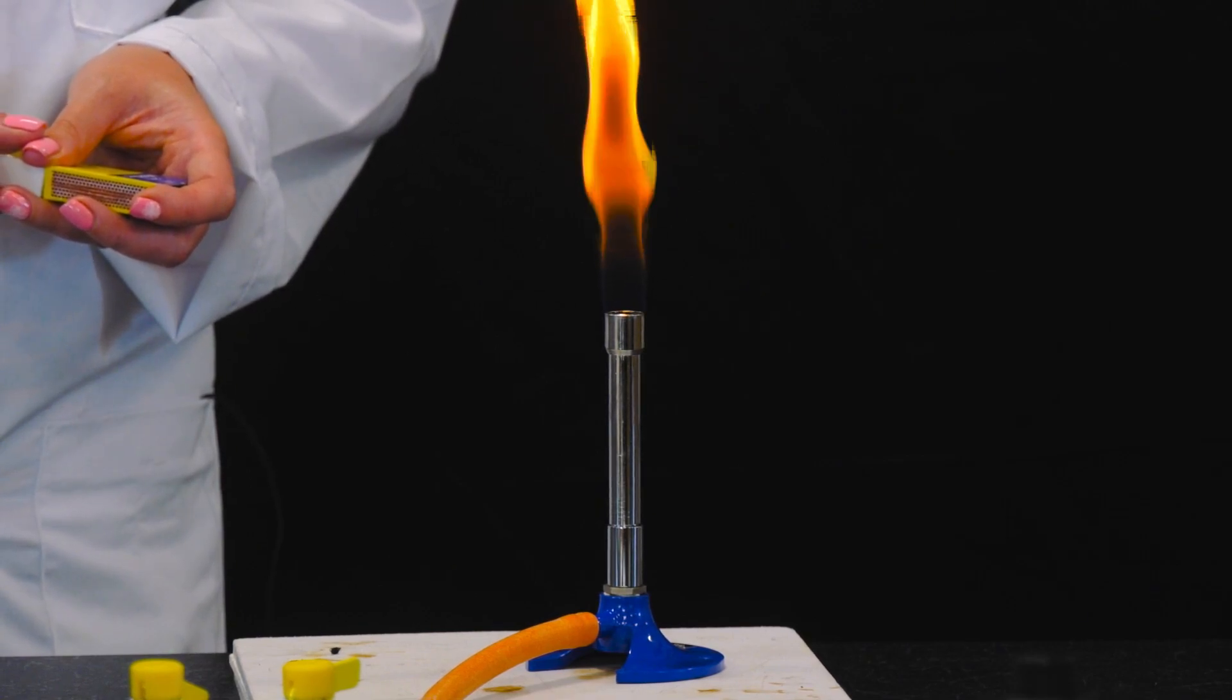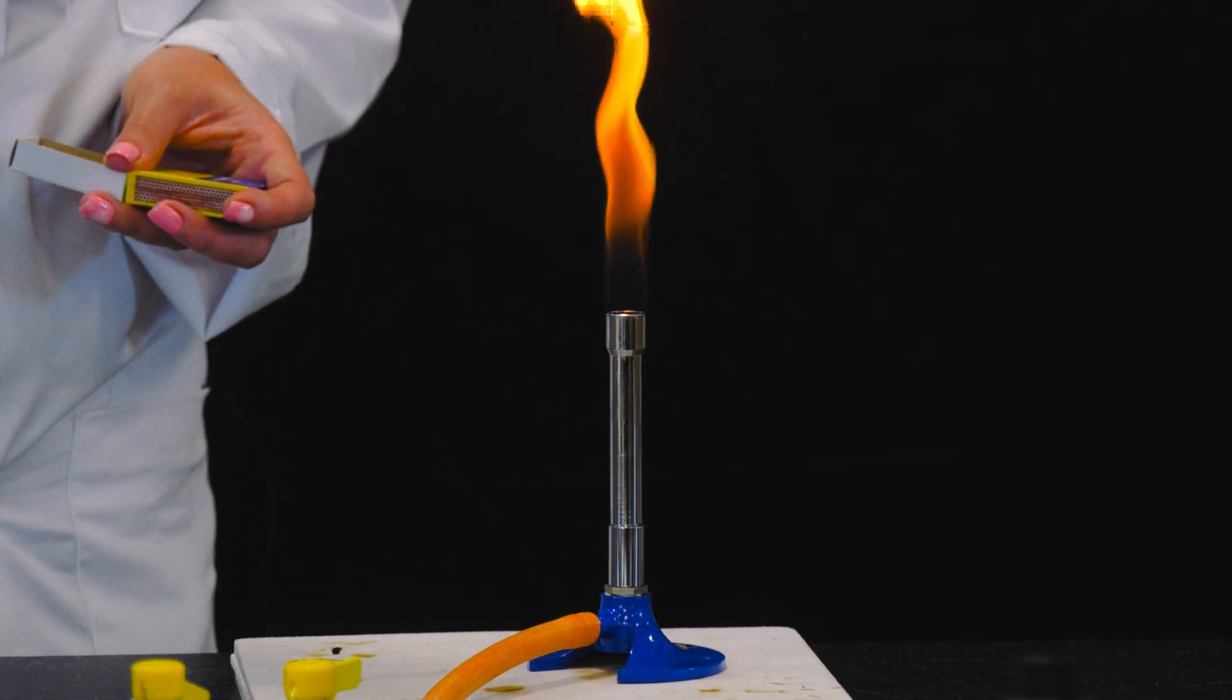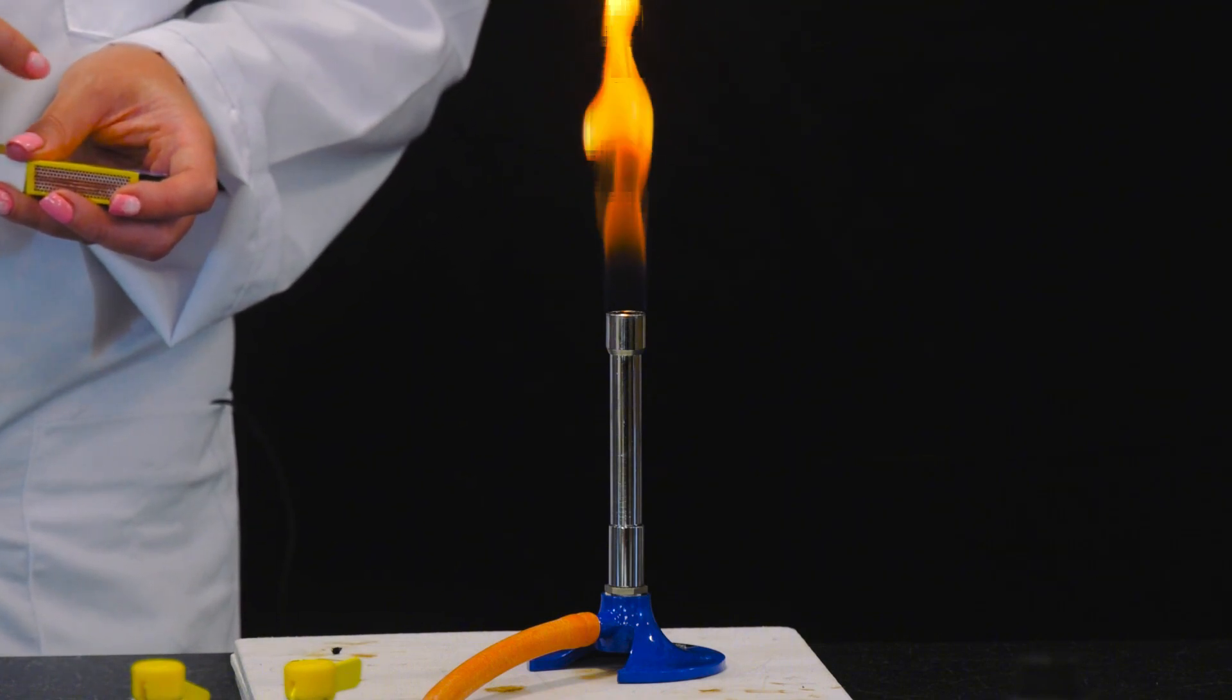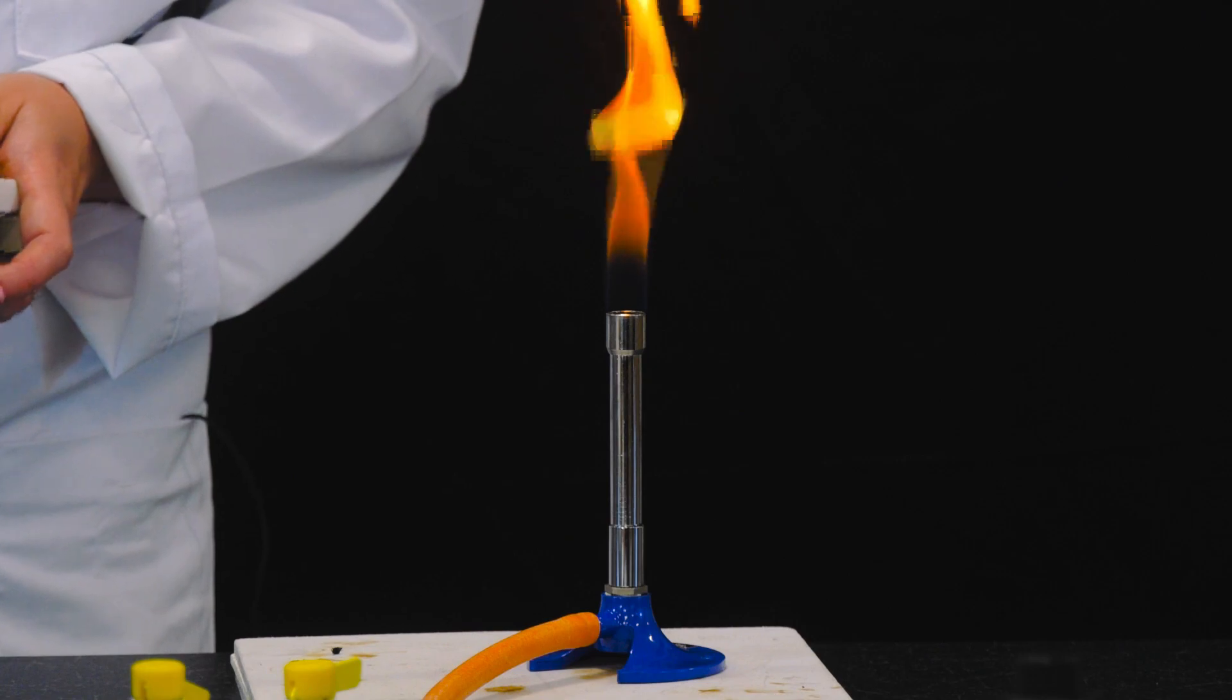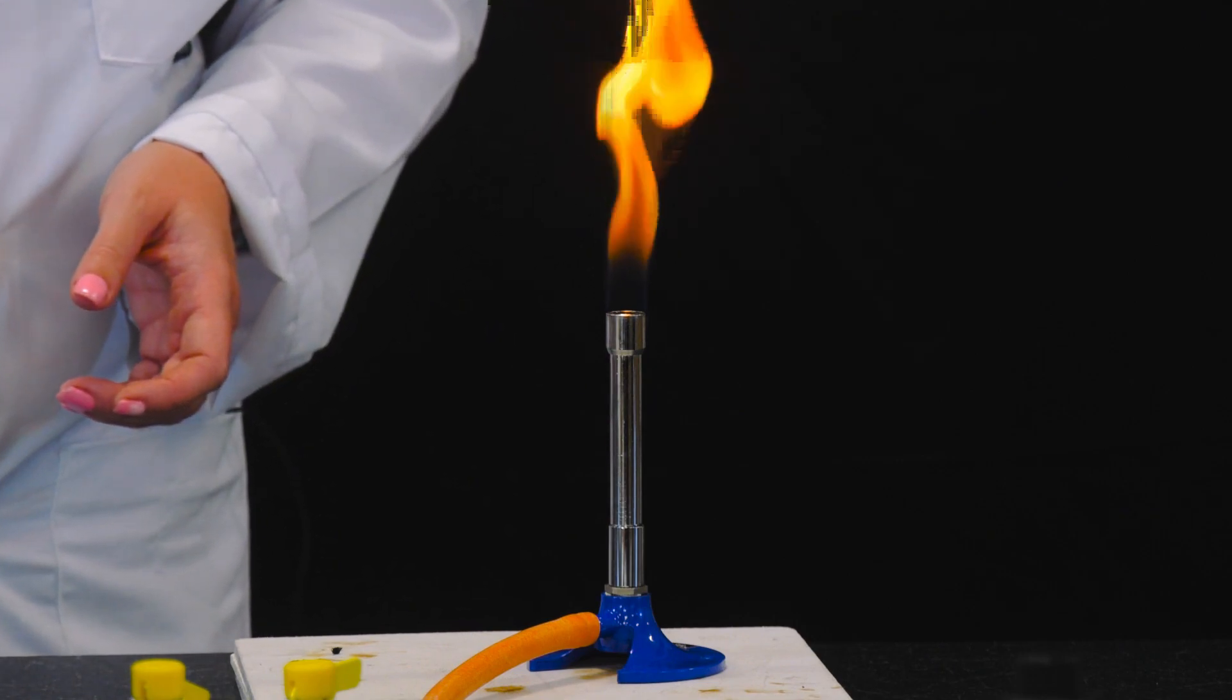You've got a yellow safety flame. This flame is cooler and more visible. To achieve a hotter blue flame, open the air hole by adjusting the collar.